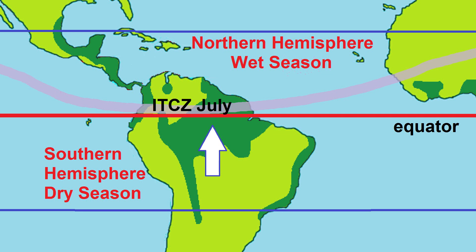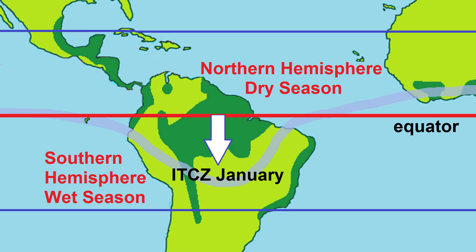In the northern hemisphere, the wet season occurs from May to July. In the southern hemisphere, it occurs from November to February.